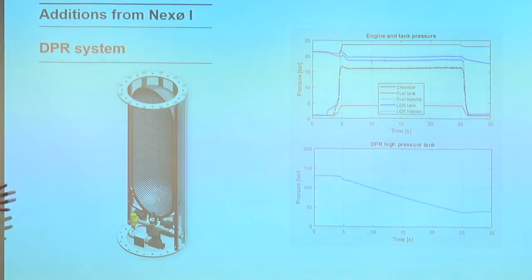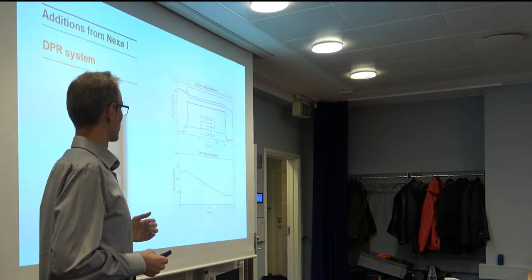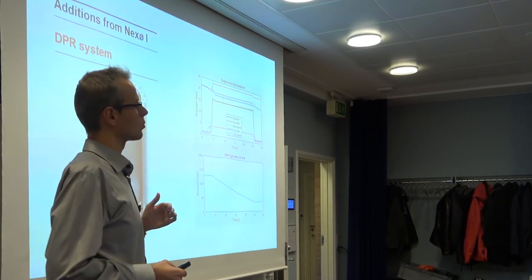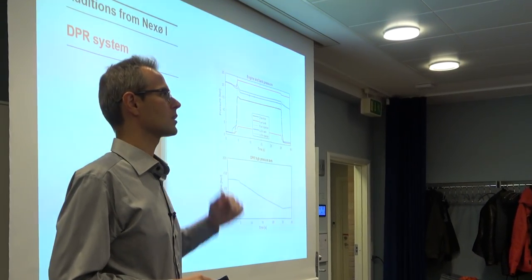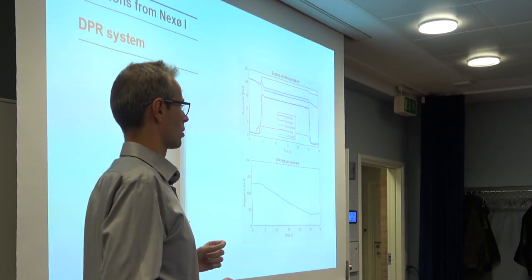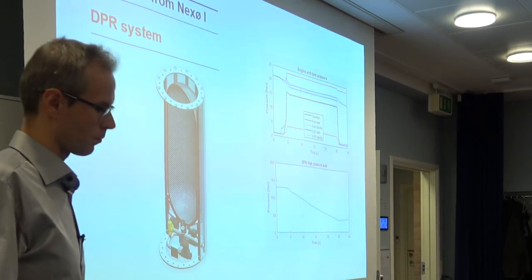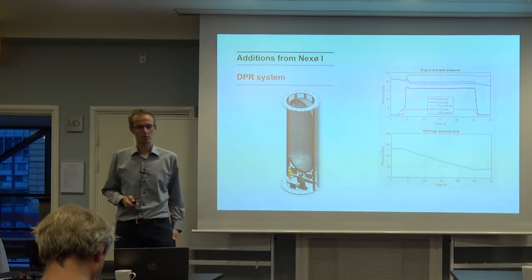The whole purpose of this is to make sure that we have a constant pressure from the engine, such that we get the highest possible efficiency when we burn the propellants. It also means we can actually fill more propellant in the tanks because we don't need a big gas pocket to drive the whole system. The gas pocket is in here and it's 300 bars.